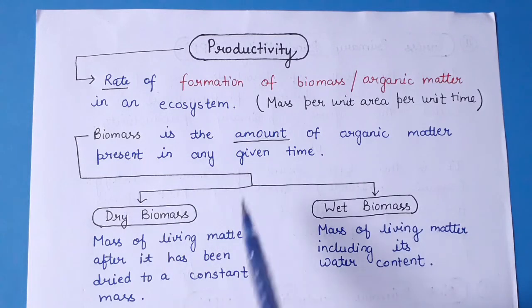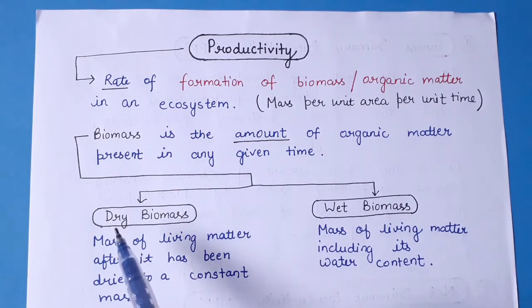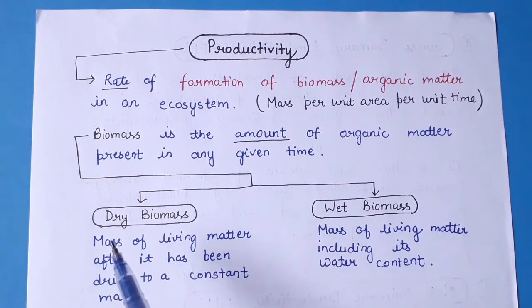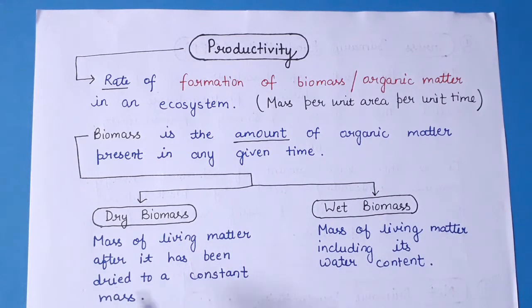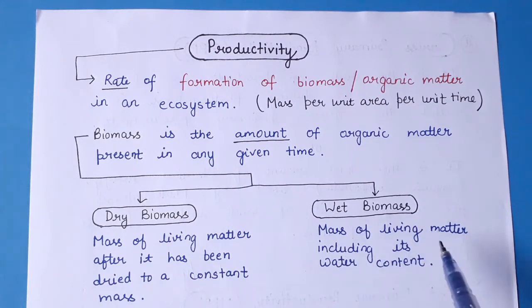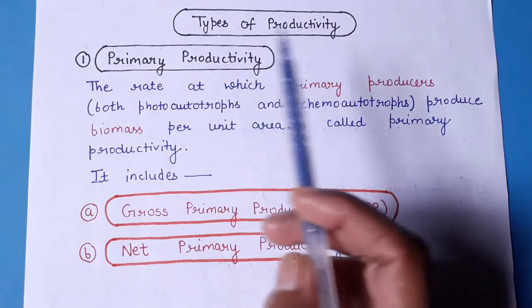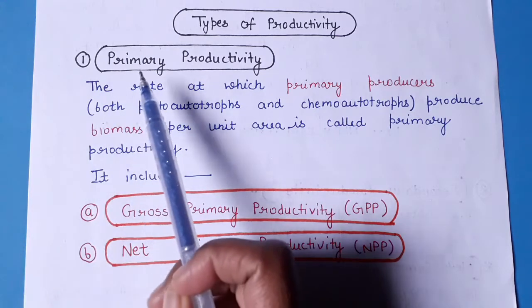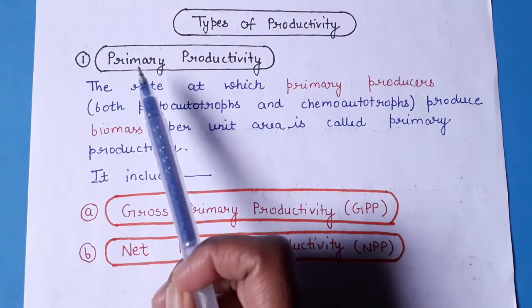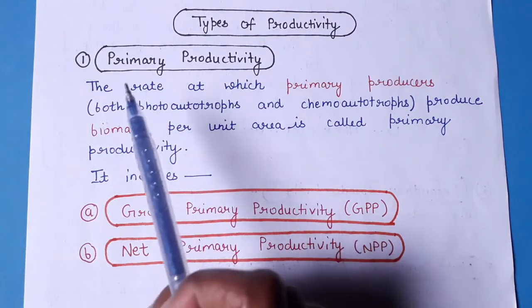Biomass can be categorized into two different categories: dry biomass and wet biomass. Dry biomass includes the mass of living matter after it has been dried to a constant mass. Wet biomass refers to the mass of living matter including its water content. Now, coming to the types of productivity.